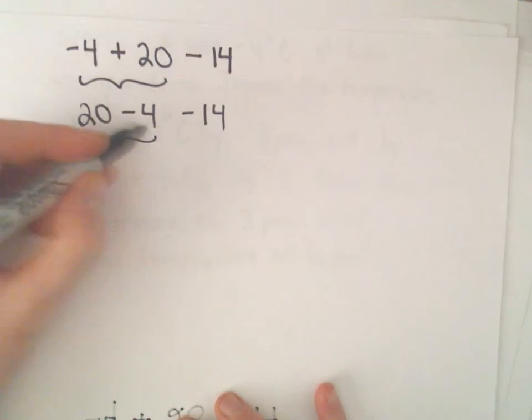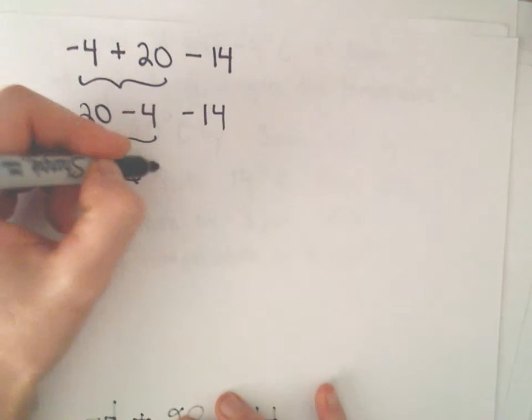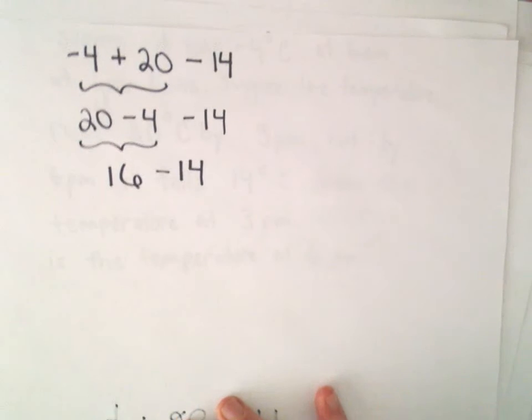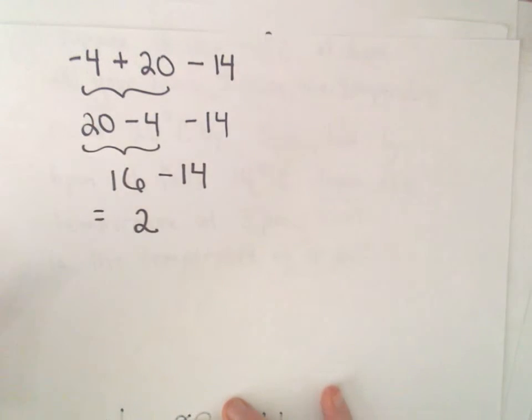So 20 minus 4, that's the same thing as 16. Then we'll have to still subtract away the 14. Well, 16 minus 14 is going to leave us with 2.